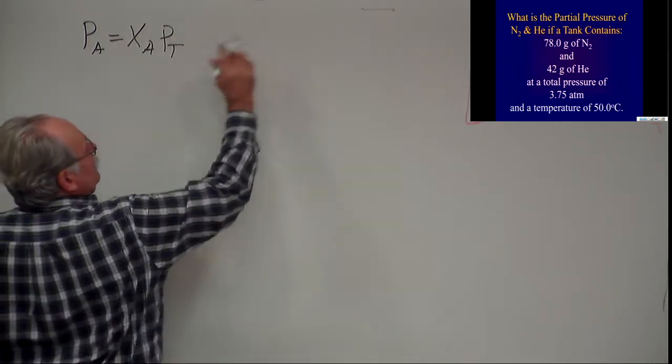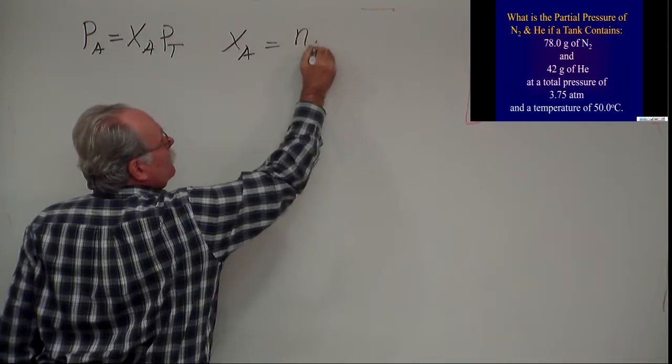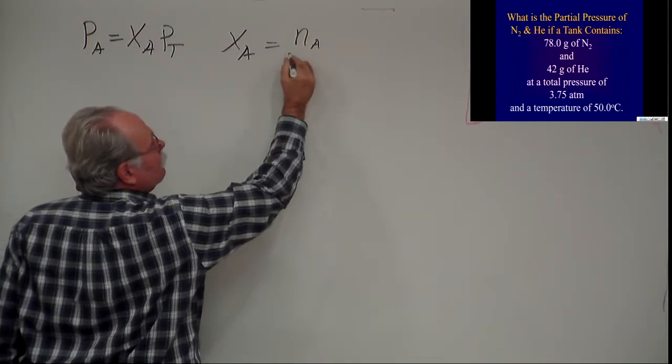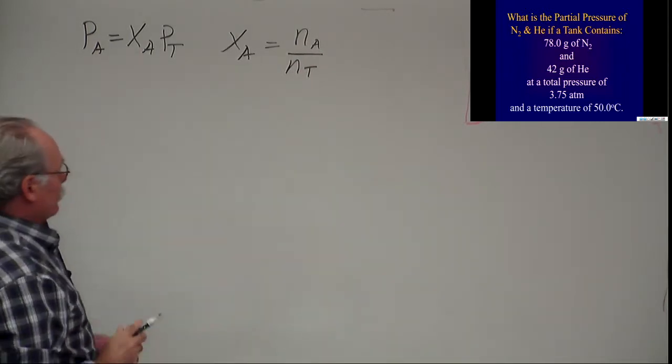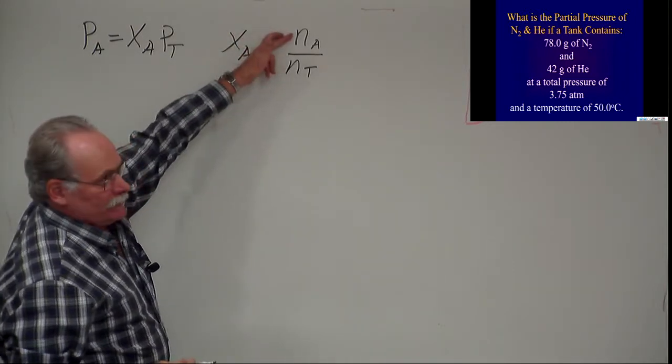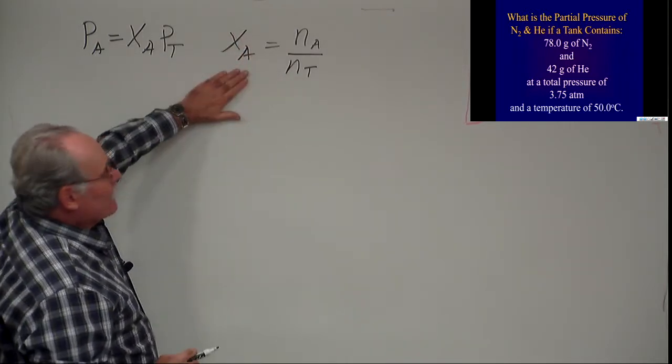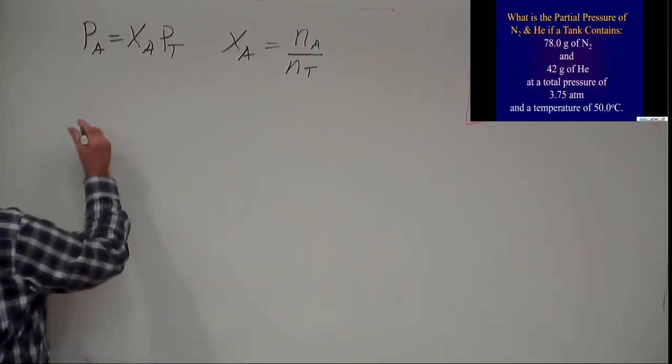We know that the mole fraction of any gas, X sub A, is equal to the number of moles of that gas divided by the total particles. So what we need to do first is calculate the moles of each species, then the total moles, then the mole fraction, and then we'll have two equations we're solving.